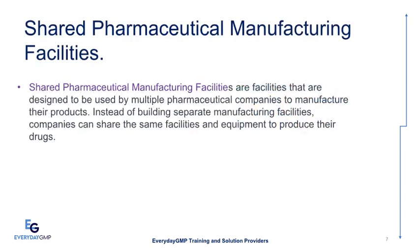Shared pharmaceutical manufacturing facilities are facilities that are designed to be used by multiple pharmaceutical companies to manufacture their products. Instead of building separate manufacturing facilities, companies can share the same facilities and equipment to produce their drugs.